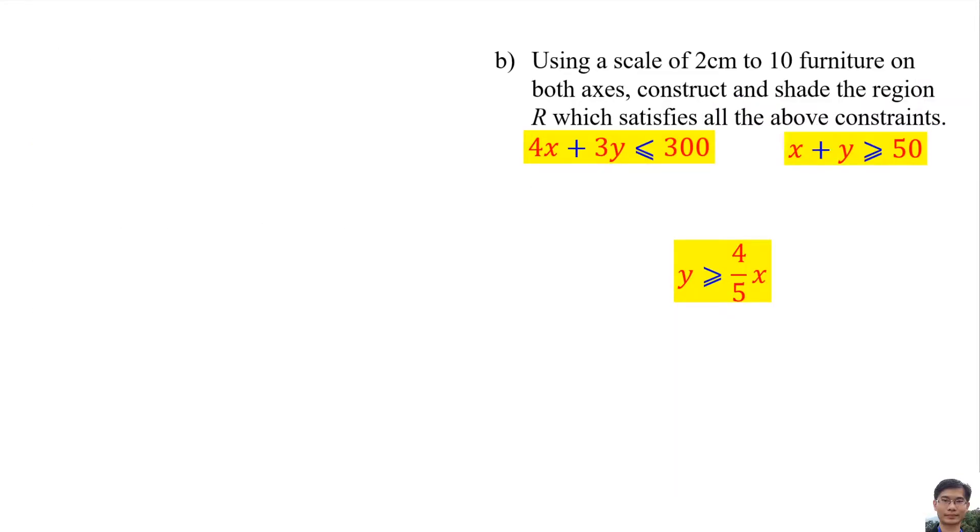Part B: Using a scale of 2 cm to 10 furniture on both axes, construct and shade the region R which satisfies all the above constraints. To draw a line, we need 2 points.